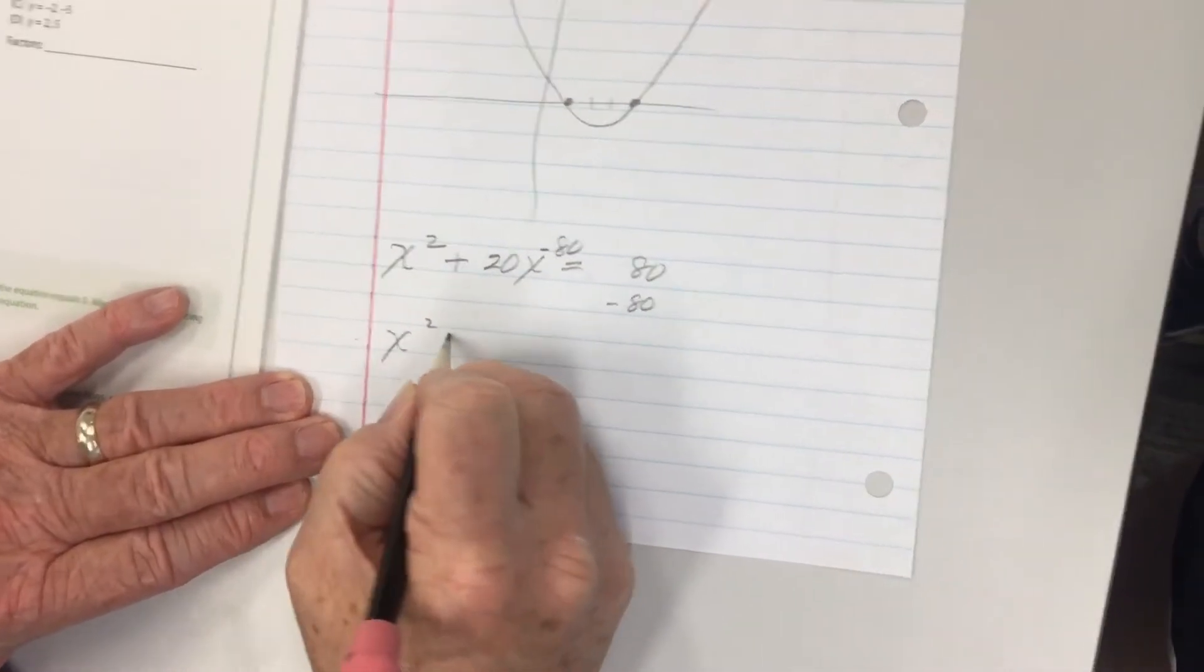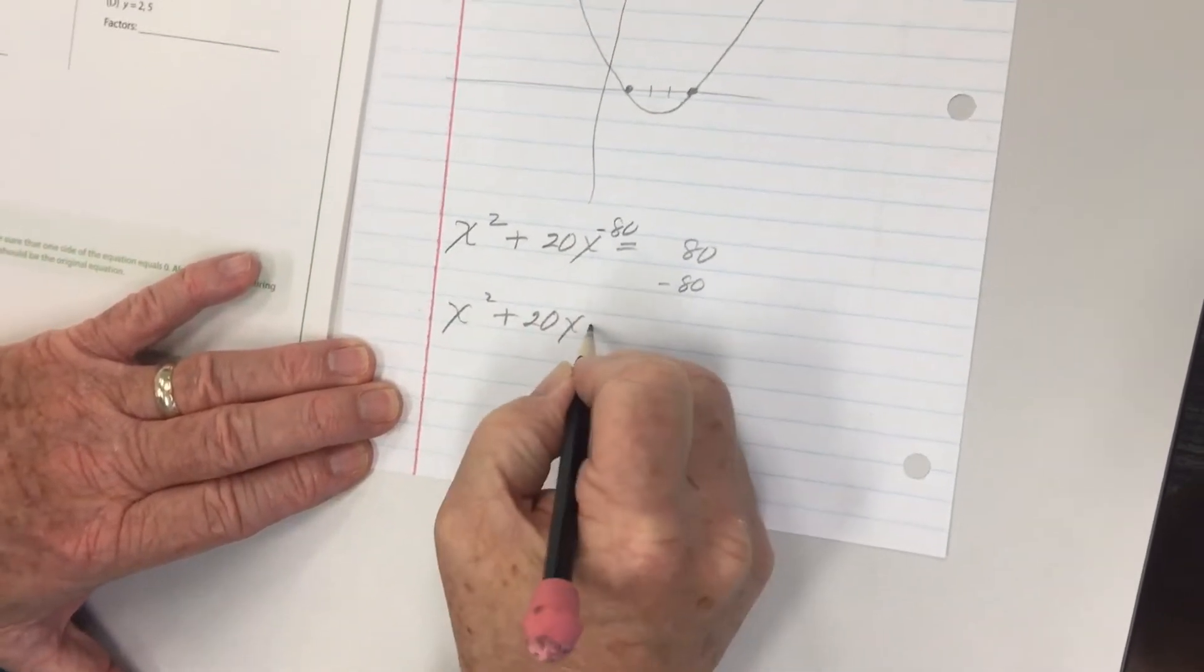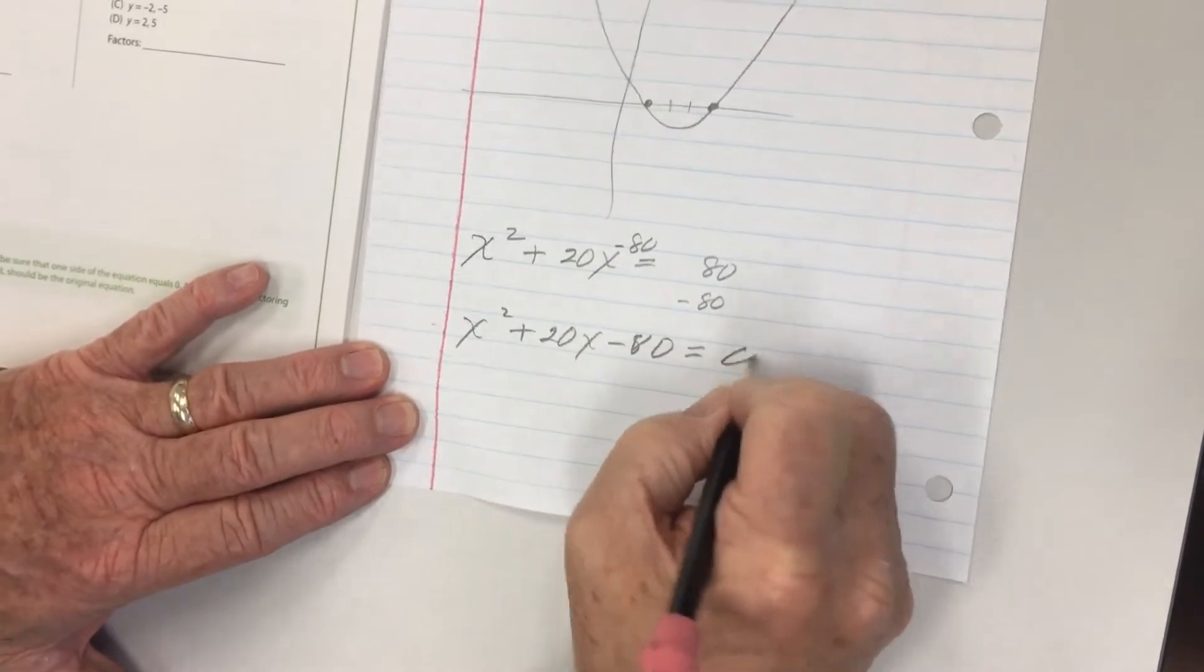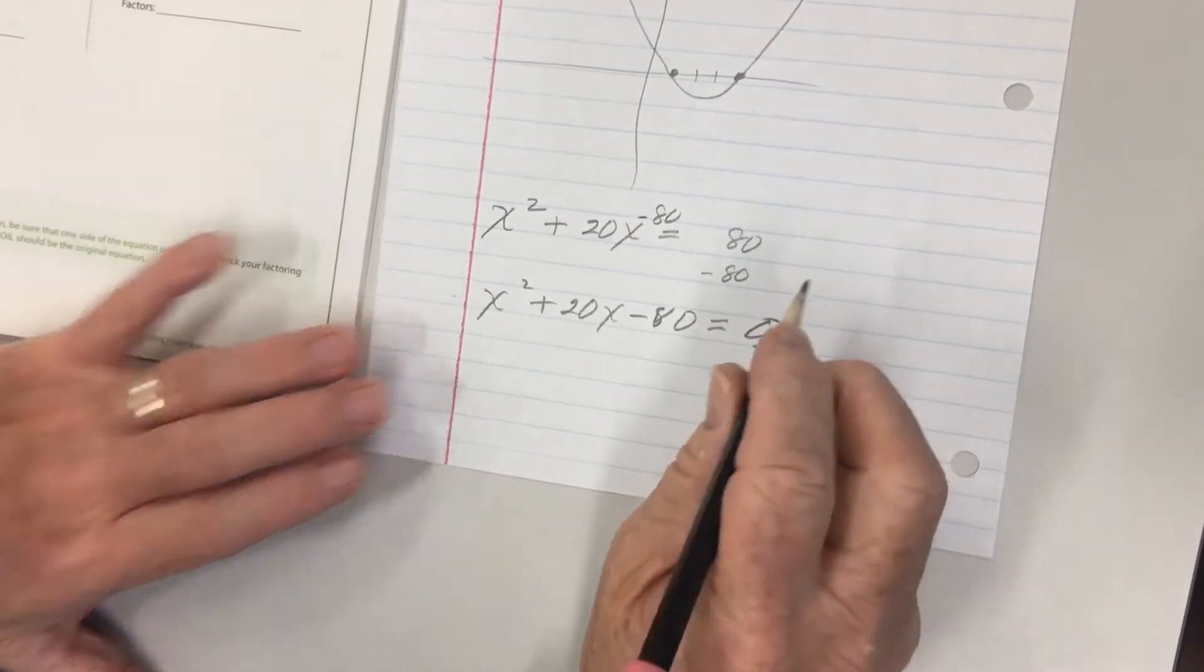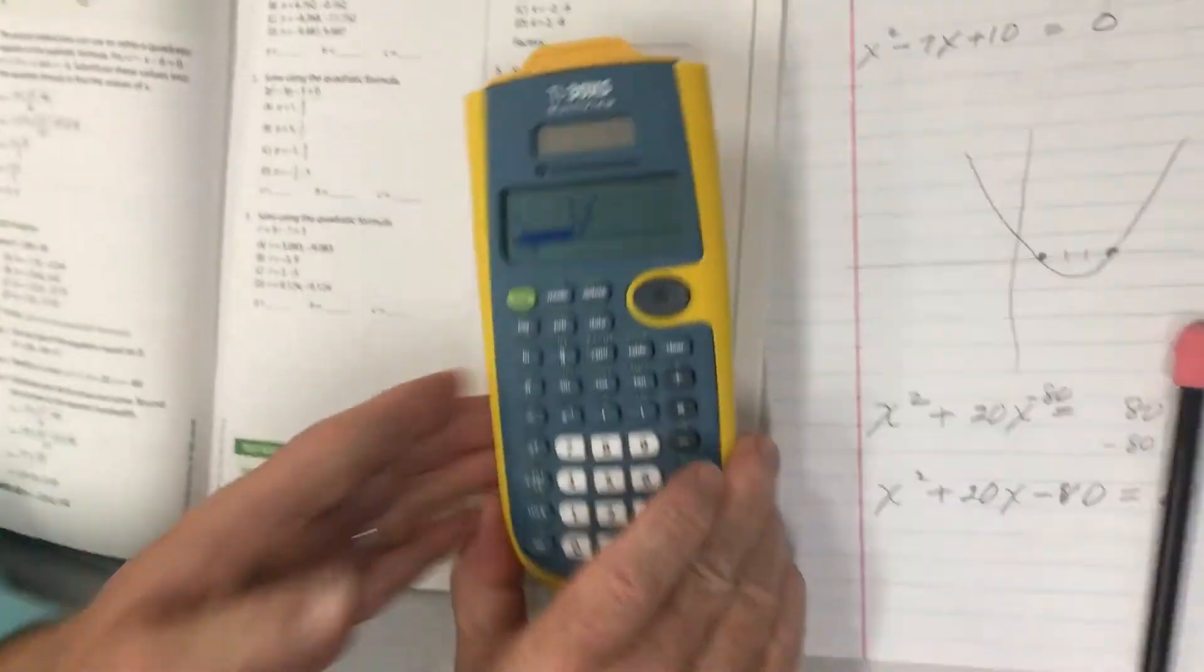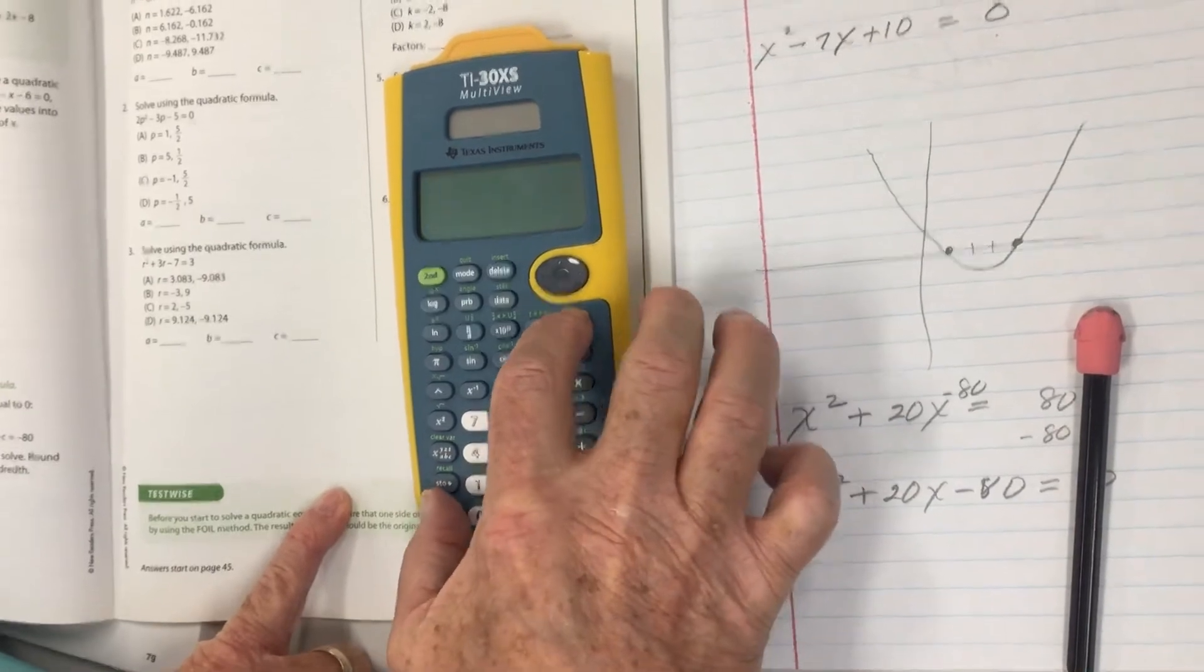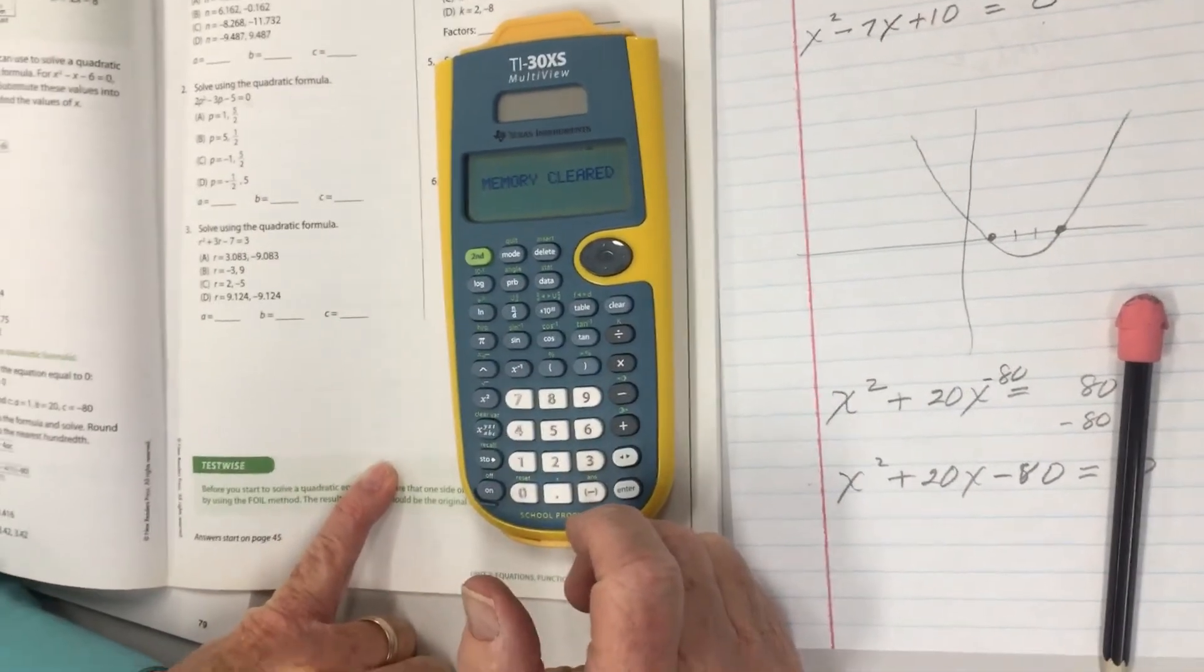Again, I want to subtract 80 from both sides, and that gives me x squared plus 20x minus 80 is equal to zero. Remember, again, I gotta have that zero over there. I'm going to take my calculator again. I'm going to clear it first. Okay, memory's cleared.